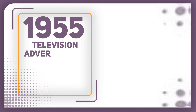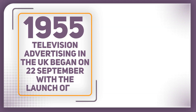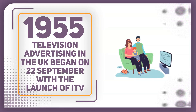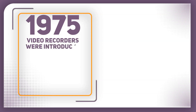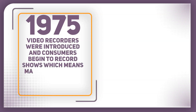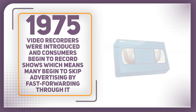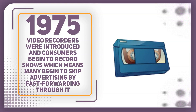In 1955, television advertising in the UK began on the 22nd of September with the launch of ITV, which was the first commercial channel aimed at making a profit and the first competitor for the BBC. The first commercial played was for Gibbs Toothpaste — it featured a tube of toothpaste, a block of ice, and a commentary about the product's tingling fresh qualities. From here, TV advertising blew up and businesses all over the globe began to develop recorded adverts. In 1975, video recorders were introduced and consumers began to record shows, meaning many started to skip advertising by fast-forwarding through it. This became an issue for advertisers, who began to seek out new ways to get their message to customers.